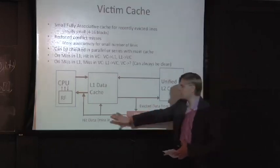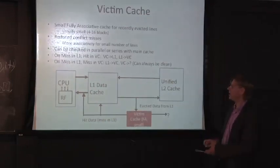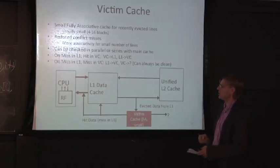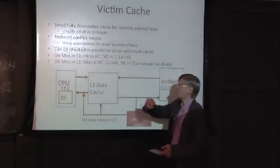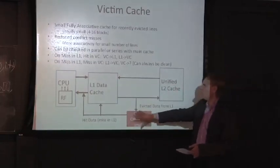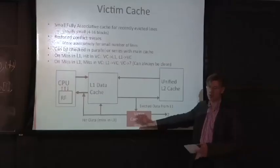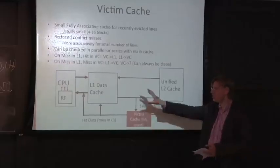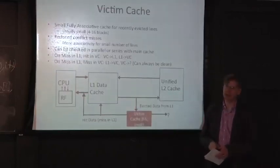Now, you can check this either in parallel or in serial with your level one cache. And there's a couple design questions that come up here. On a level one miss, and let's say it misses in the victim cache, what goes about happening here? Well, you're going to be bringing in a new line from the level two cache. You're going to take what was in the level one cache, and you're going to move it into the victim cache. And you want to go check this on future cache accesses that miss in the level one cache. But the question is, what happens with the victim cache?